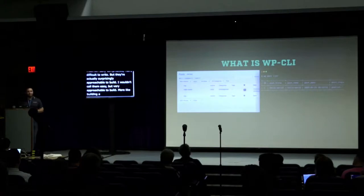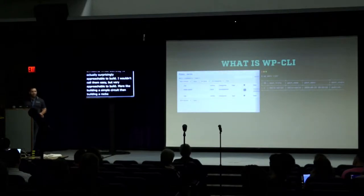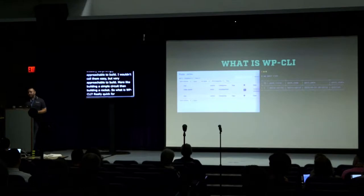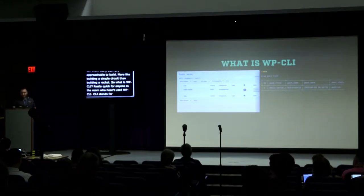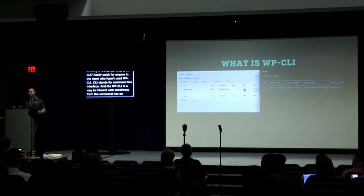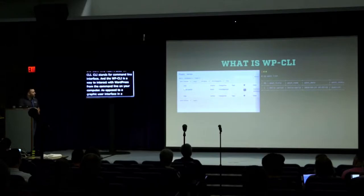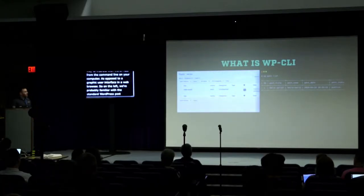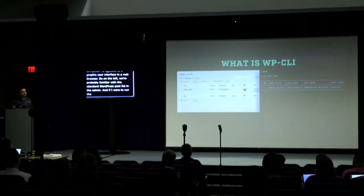So what is WP-CLI? Really quick, for anyone in the room who hasn't used WP-CLI — CLI stands for Command Line Interface. WP-CLI is a way to interact with WordPress from the command line on your computer, as opposed to using a graphical user interface in a web browser. On the left we're probably familiar with the standard WordPress post list in the admin, and if you run a WP-CLI command you get a similar list in your terminal.